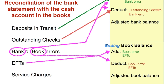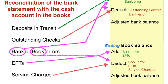You can also have service charges. This may be something you know is going to happen but you may not know exactly when or the amount. So you don't know this until you get your bank statement. The bank knows about it but you don't until you receive the statement. So it's an adjustment to the book side, and a service charge is obviously going to be a deduction from your book balance.